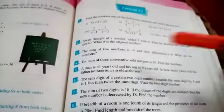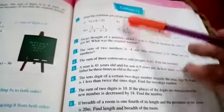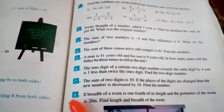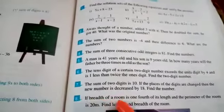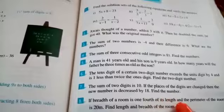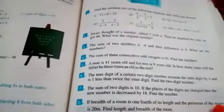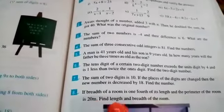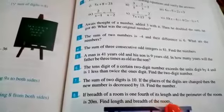Bismillahirrahmanirrahim. Dear students, now we have Exercise 7.1, last question, question number 8. If breadth of a room is one-fourth of its length and perimeter of the room is 20 meters, find the length and breadth of the room.